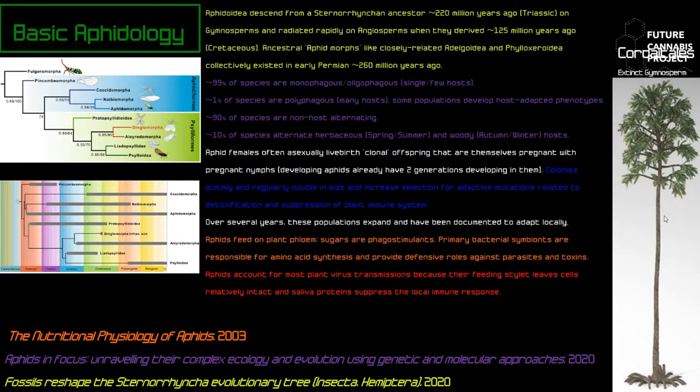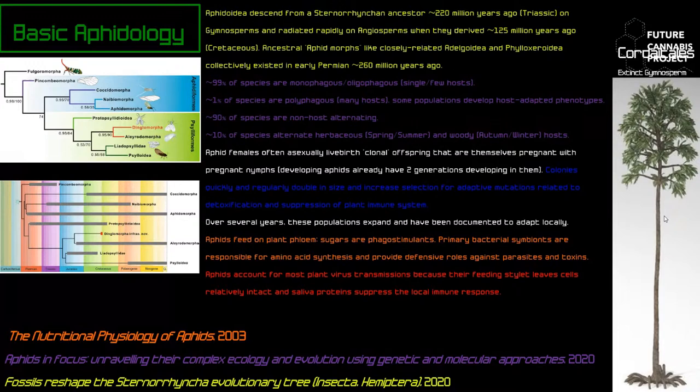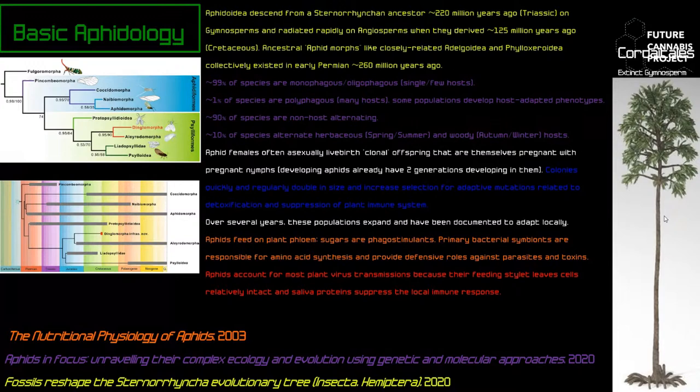Aphids account for most plant virus transmissions. Their feeding stylet penetrates plant tissue without killing many cells, making it very efficient at transmitting viruses. Cannabis's virome is not very well understood, so in the future we may find that the rice root aphid is a competent vector of something important to cannabis growers.